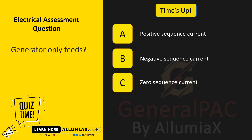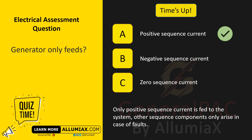The answer is A — positive sequence current. Only positive sequence current is fed to the system by the generator. Other sequence components only arise in the case of faults.